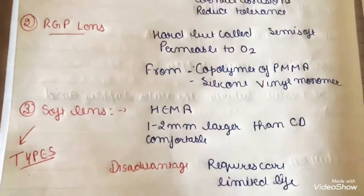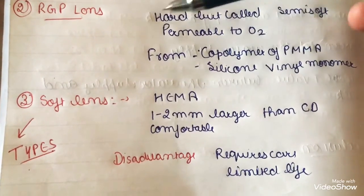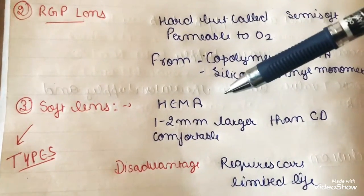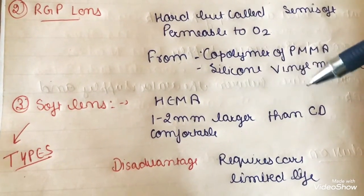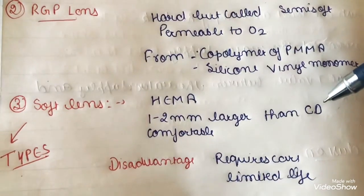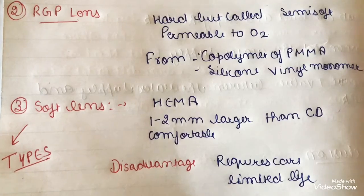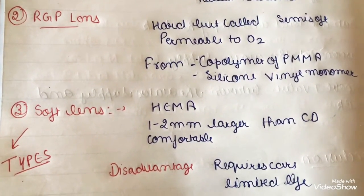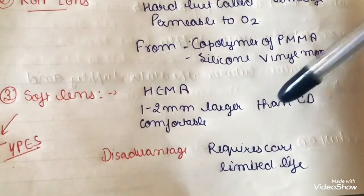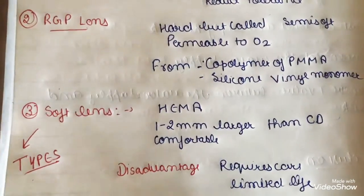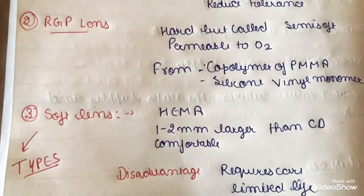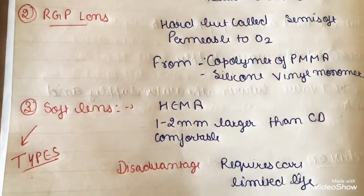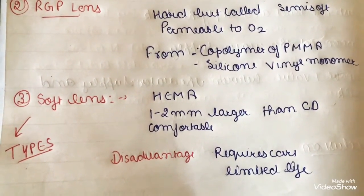Soft lenses are made from hydroxy acrylate material and are 1 to 2 mm larger than the corneal diameter, making them more comfortable. The disadvantage is that because they are soft, they can tear very quickly and can cause irritation easily. Their lifespan is also very limited.